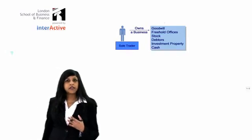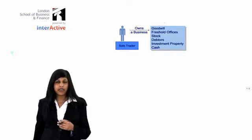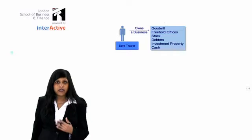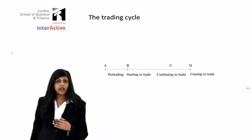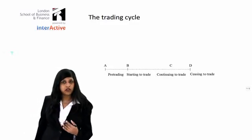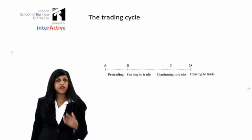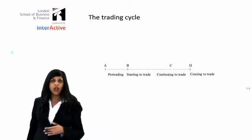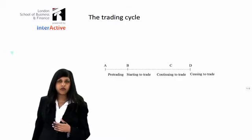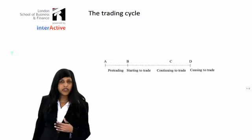A sole trader chooses an accounting date, and every year he has to prepare accounts to that accounting date, and on his trading profits he has to pay income tax. So a sole trader has a trading cycle. The trading cycle begins when the sole trader starts trading and ends when he stops trading, which could be many years later. Over that trading cycle, the sole trader will make trading profits on which he has to pay income tax.